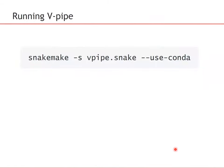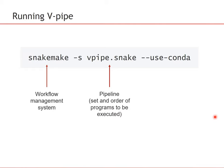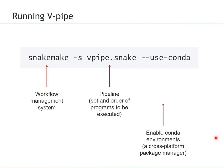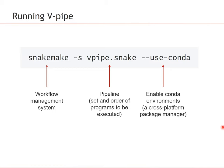vPipe is a command line tool based on Snakemake. To run vPipe, you call Snakemake with a parameter specifying the pipeline itself. The pipeline is specified in a Snakemake file, which contains the set of all programs to be executed and the order in which these steps need to run. You can also invoke the use-Conda flag, which enables the Conda environment — a cross-platform package manager that allows easy installation of pipeline components.